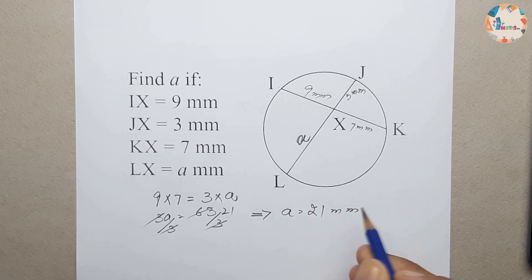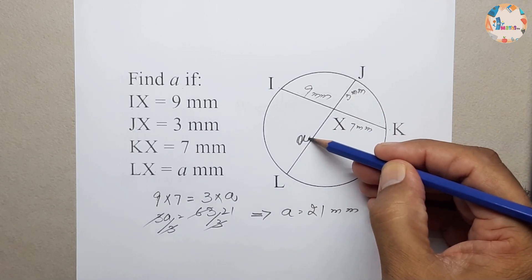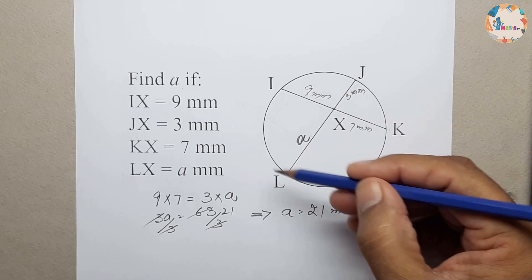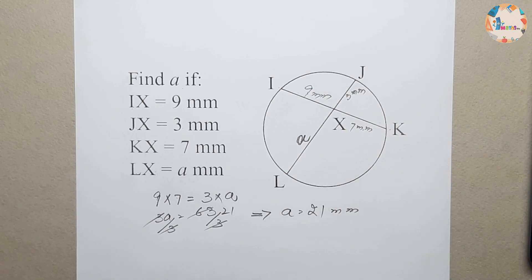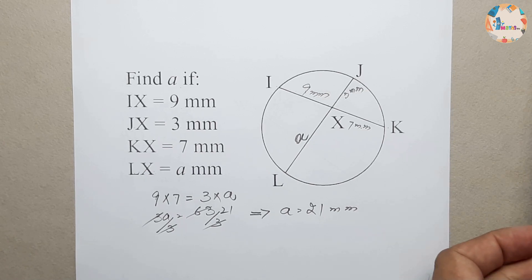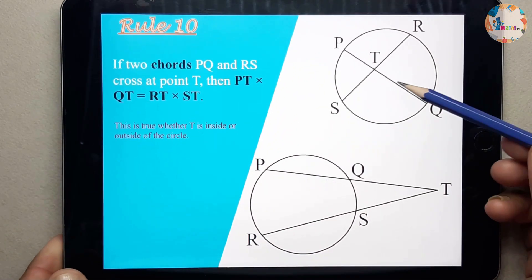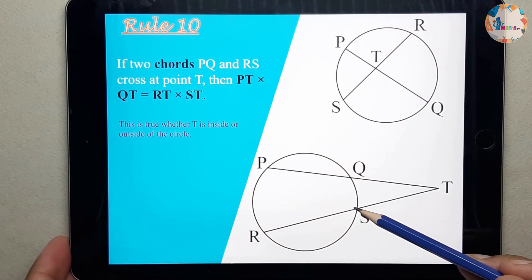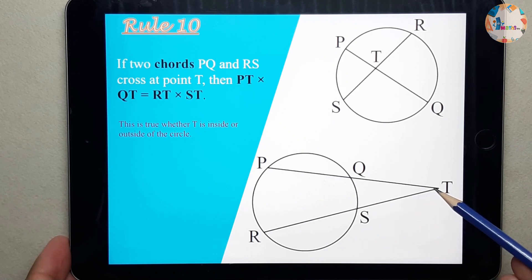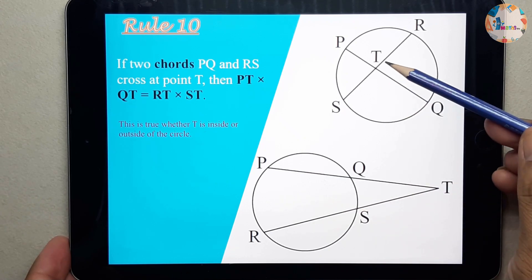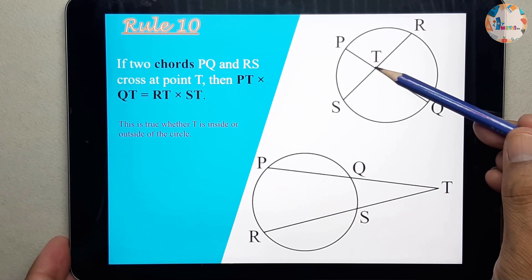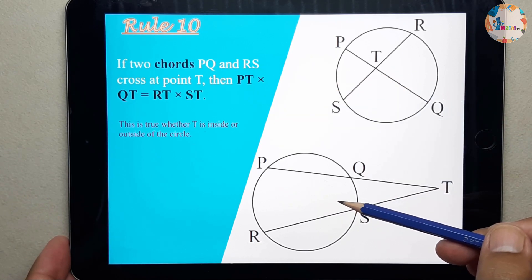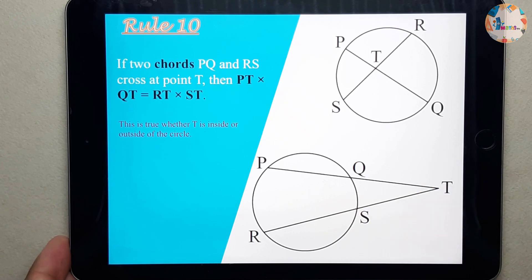This is how the product of these two chord segments multiplied equals the product of the other two chord segments. This is one aspect of rule number 10. Now we will go through the other aspect, which is when point T is outside the circle.